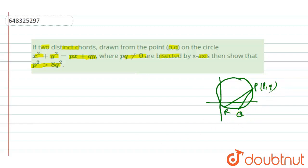So here, let PA be the chord of the given circle. Let PA be the chord of circle, and the coordinate of P is p,q.